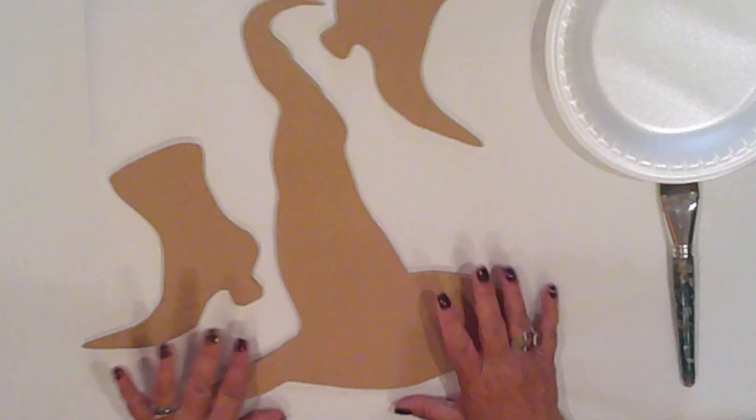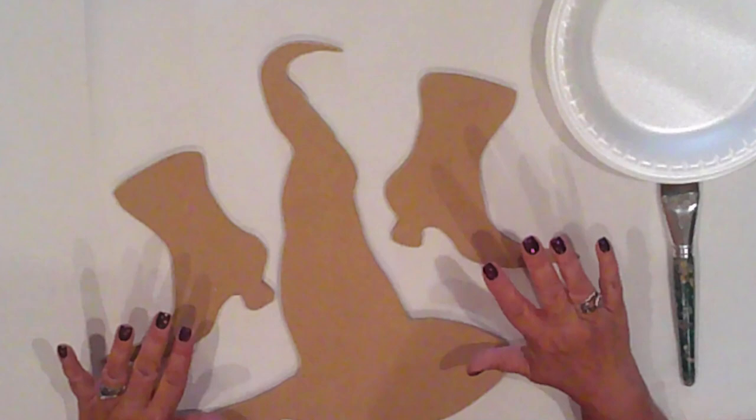With my scroll saw, I cut my witch hat and boots from MDF. This is such a simple yet fun piece. I'll base coat all three pieces with two coats of Ceram Coat charcoal.